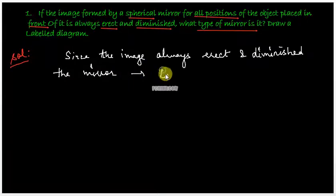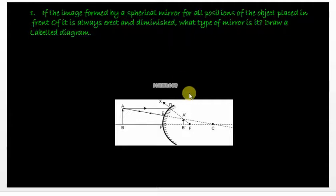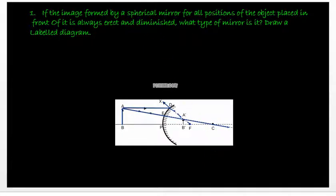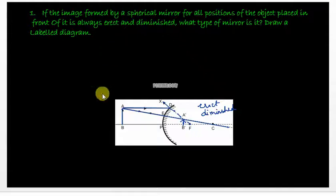Now we'll draw the labelled diagram for this convex mirror and show how the image is formed. We show that AB is the object and we draw two rays. The first ray goes parallel to the principal axis; after reflection from the convex mirror it appears to come from the focus. The second ray passes through the centre of curvature; after reflection it retraces its path and appears to come from the centre of curvature. The image is formed where the rays intersect, and it is always erect and diminished.